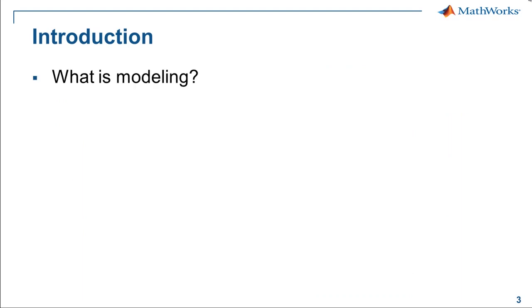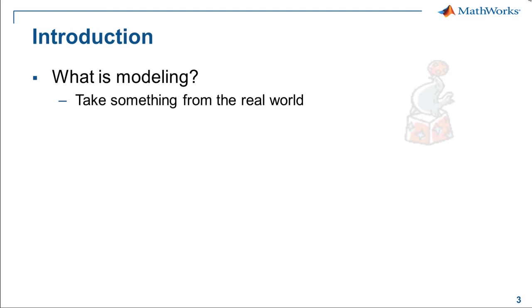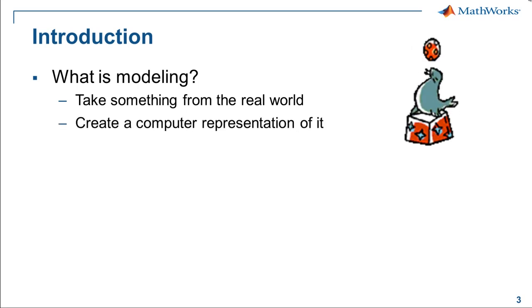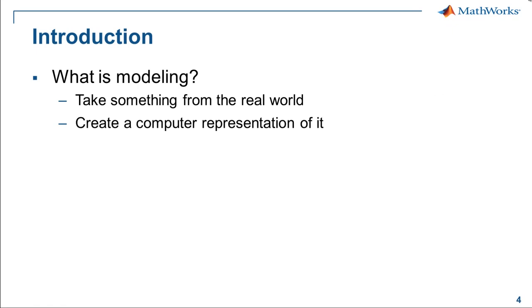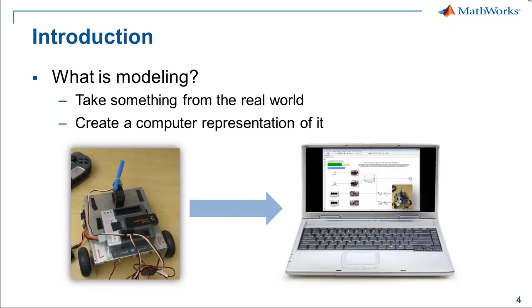I mentioned that Simulink is a graphical modeling environment. So what does modeling mean? Modeling is taking something from the real world, such as a bouncing ball, and creating a computer representation of it — perhaps with the intent of seeing how it would bounce if it were dropped on a different planet. In our case, we want to model the brain of our robot: what will our robot do when we give it certain commands?